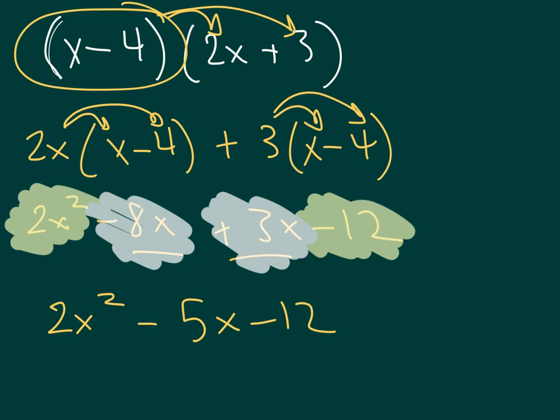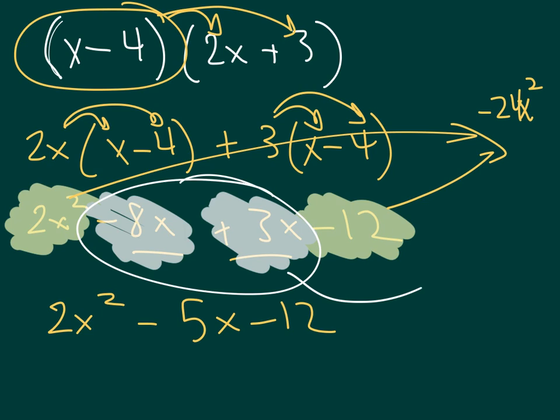So what we see here is that both these outermost two terms, these two, those multiply to give us negative 24x squared, as does those two pieces right there when we multiply them together.